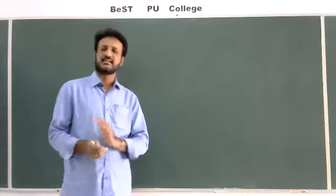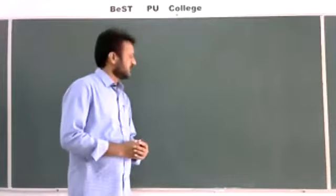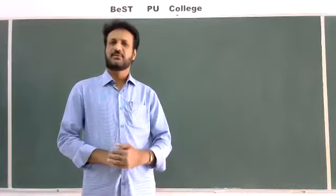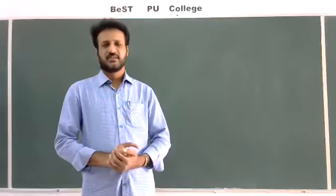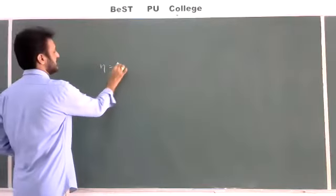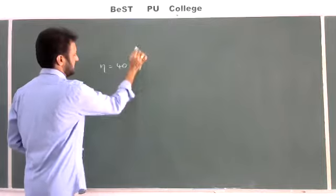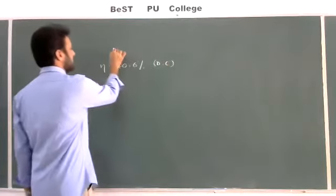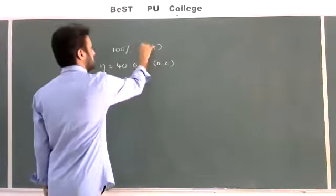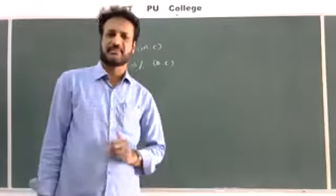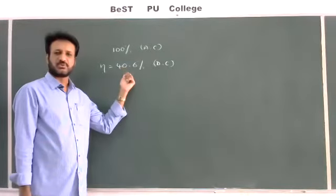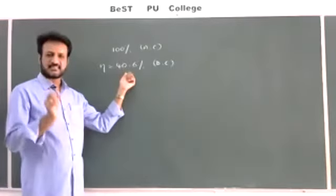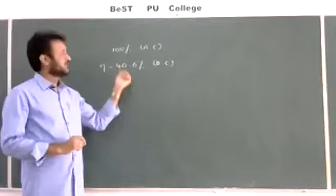Here I will compare both. One important parameter to remember: in the case of the half wave rectifier, the efficiency is only 40.6%, whereas in the full wave rectifier the efficiency is double — 81.2%. So in the case of the half wave rectifier, we apply 100% AC but only get 40.6% DC at the output. That means the output DC is always less than the AC component.